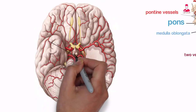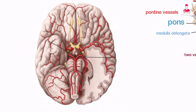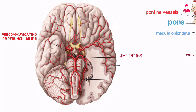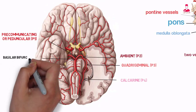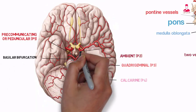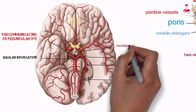The posterior cerebral arteries can be divided into four major segments: pre-communicating or peduncular, ambient, quadrigeminal, and calcarine. The pre-communicating segment is a short segment that extends laterally from the basilar bifurcation to the posterior communicating artery.